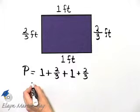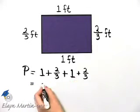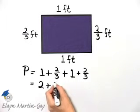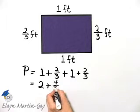Alright, let's see what we have. Well, we have one plus one, which is two, plus two-thirds plus two-thirds, that's four-thirds.